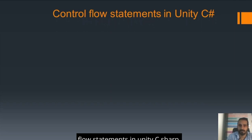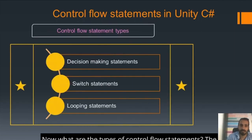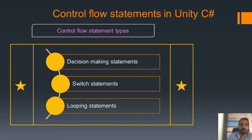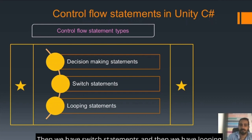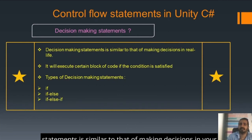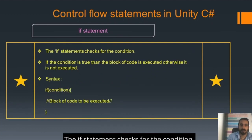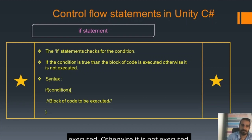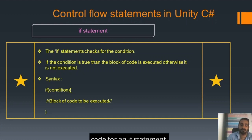Control flow statements in Unity C-sharp. The types of control flow statements are: first, decision making statements; then we have switch statements; and then we have looping statements. Decision making statements are similar to making decisions in real life. They execute a certain block of code if the condition is true or satisfied. The if statement checks for the condition — if the condition is true, then the block of code is executed; otherwise, it is not executed. Let's get into the Unity editor and write a piece of code for an if statement.